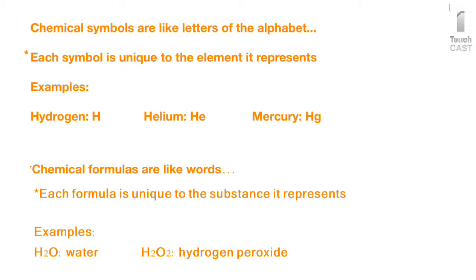So you know that each individual element is made up of a particular chemical symbol. We were talking about on the periodic table, capital letters and capital and lowercase letters. So chemical symbols are a little bit like the letters of the alphabet.